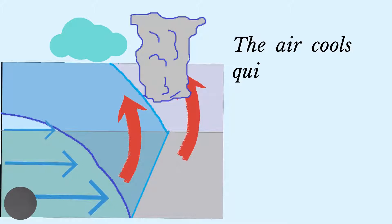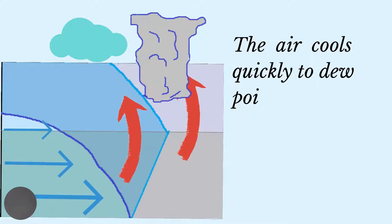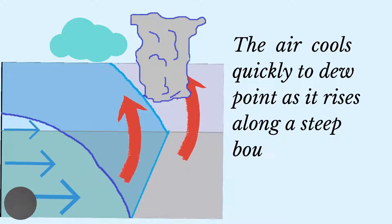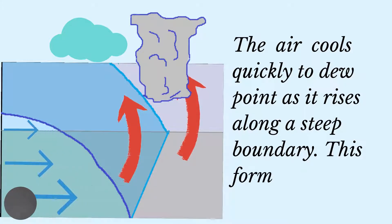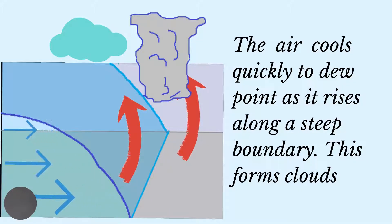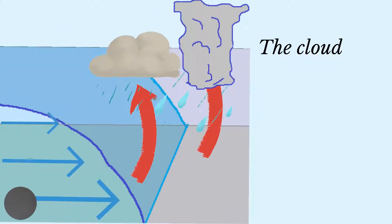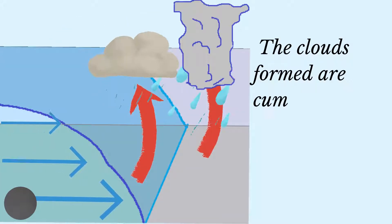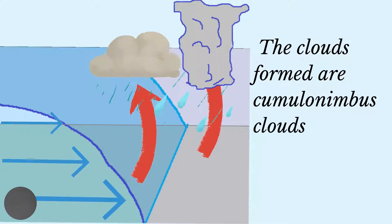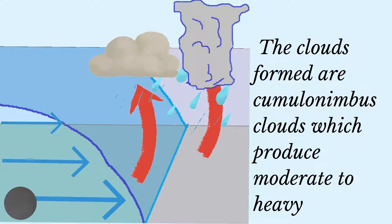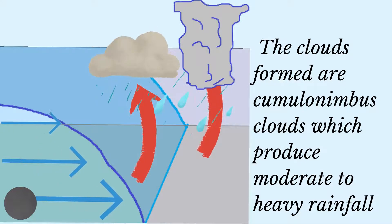The rising air cools and condenses along a steep boundary, forming thick cumulonimbus clouds. Cloud formation occurs quickly because of the high moisture content of the warm air mass. Cumulonimbus clouds are rain-bearing clouds and therefore will produce moderate to heavy rainfall.